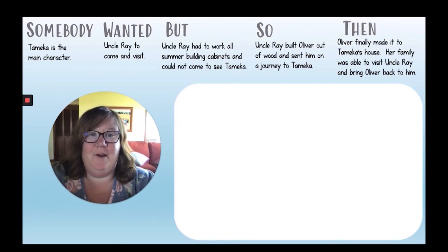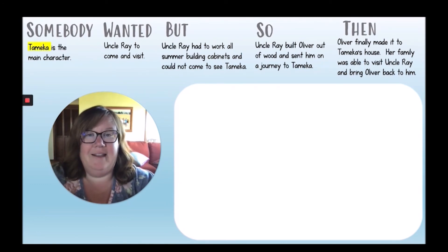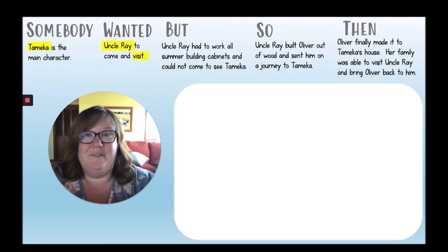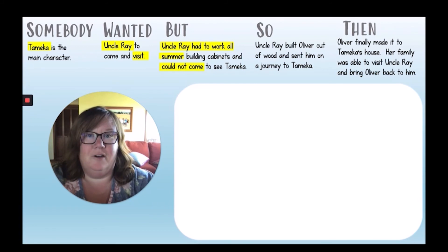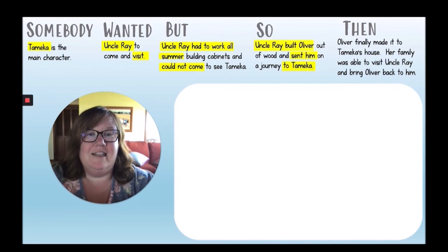Let's think about what we learned so far. Somebody was talking about the characters — we learned that Tamika is the main character of the story. As we go through each of these, I'll be highlighting the key words. Then, we talked about what Tamika wanted — Tamika wanted Uncle Ray to come visit. The problem in the story is where we get to the but. Uncle Ray could not come visit because he had to work all summer building cabinets. So — this is the way the characters try to solve the problem. Uncle Ray built Oliver and sent him on a journey to Tamika. Those are the key words I want to remember.